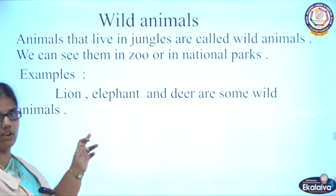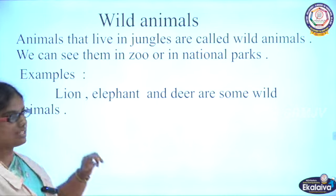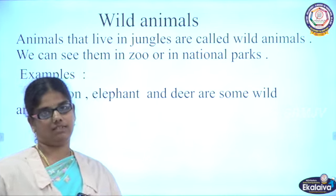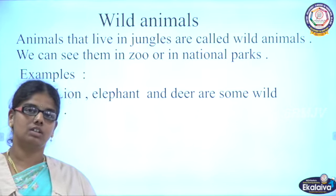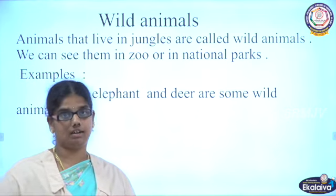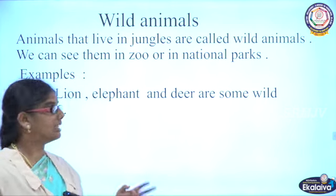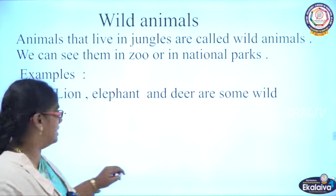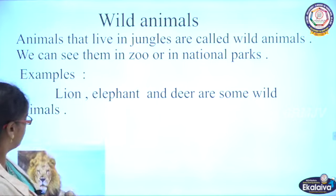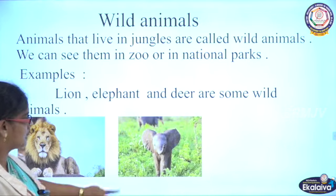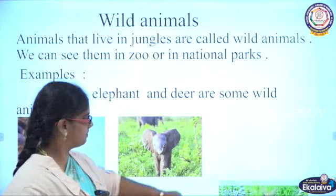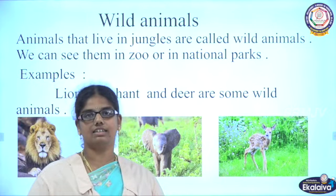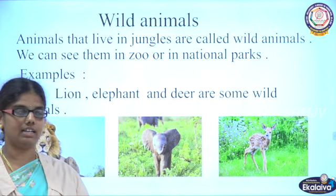First we are going to see wild animals. Animals that live in the jungle or zoo — have you all gone to the zoo? Yes, very good. What animals will you see in the zoo? Lion, tiger, monkey. These animals live in the jungles and are called wild animals. Examples: lion, elephant, and bee. These animals live in jungles and in the zoo, so they are called wild animals.